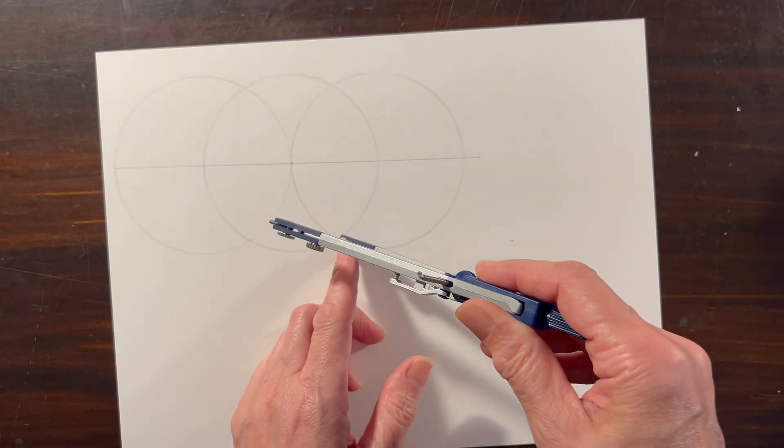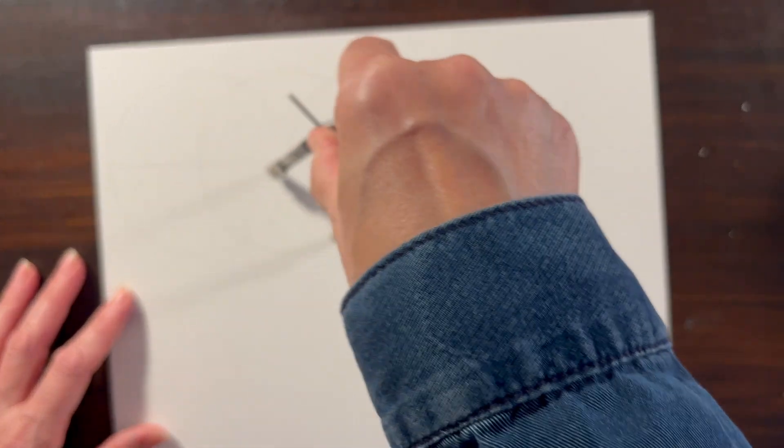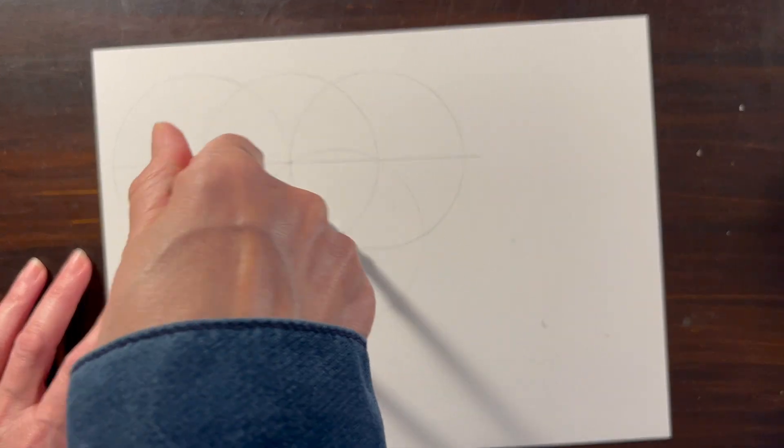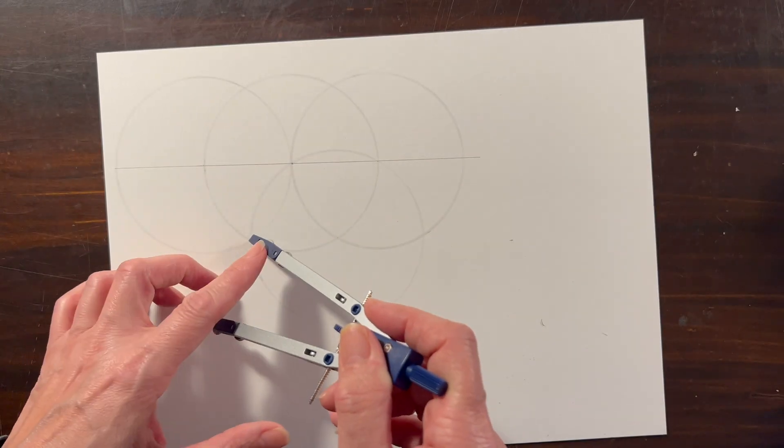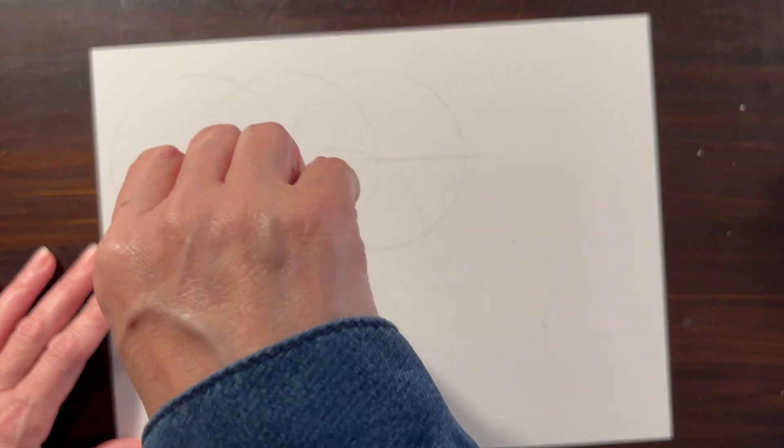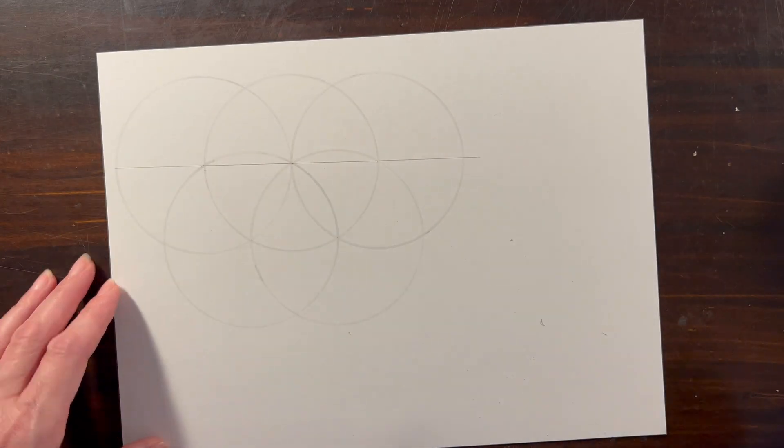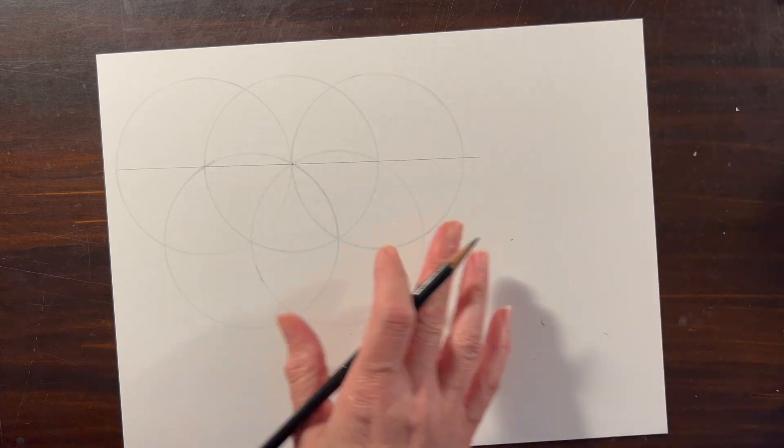And then where those two circles cross, where that arc is, we're going to place our compass and once again draw another circle. And then you can see where these arcs are crossing, we're going to place one more circle so that we have five circles, three on top and two below.